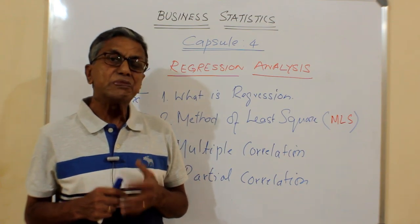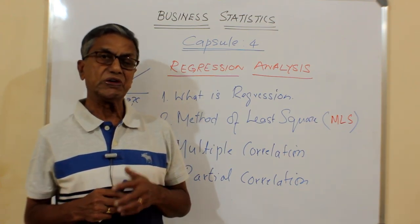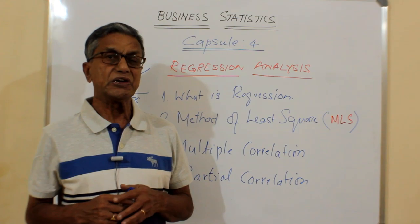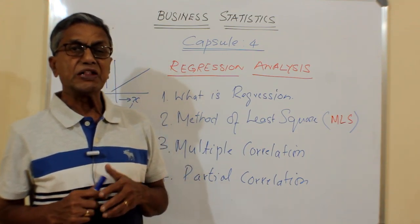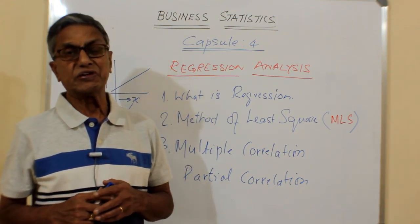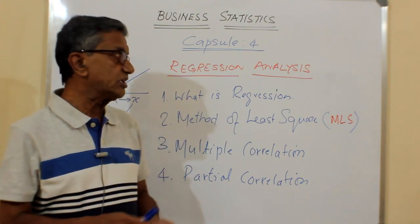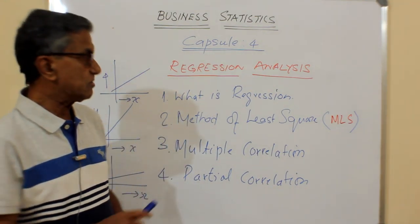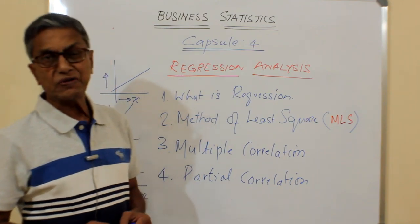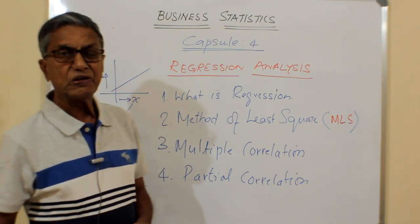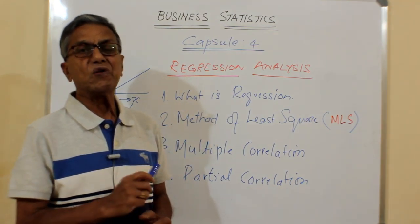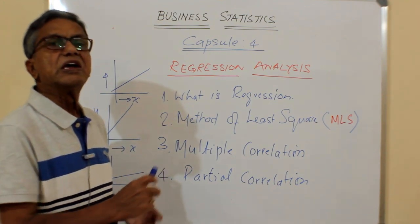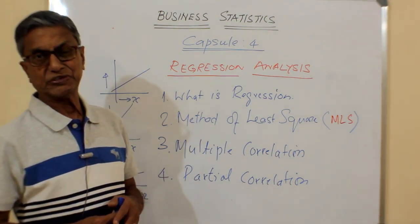Regression finds immense use in forecasting, especially in business modeling, and that will help us to make effective decisions. We will see by way of the method of least squares how to arrive at the regression coefficient, what exactly the regression coefficient means, and then understand these concepts through a couple of examples.